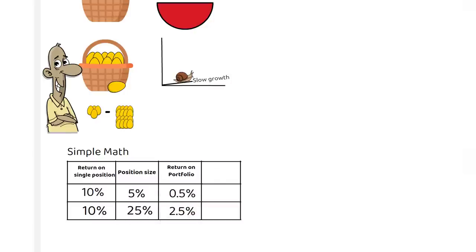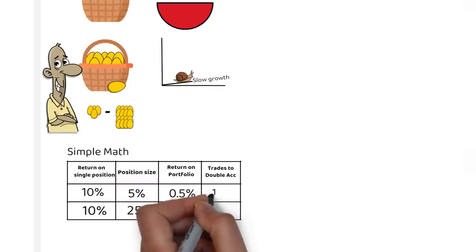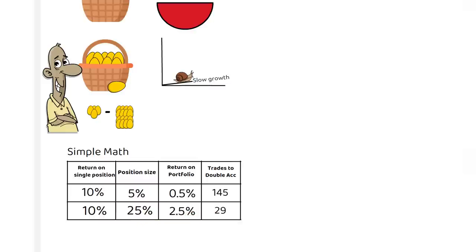To double your account with 5% position sizing through compounding, you would need 145 trades, while you would only need 29 trades to double your account with 25% position sizing. That's the impact of position sizing, despite the same 10% return on an individual trade.